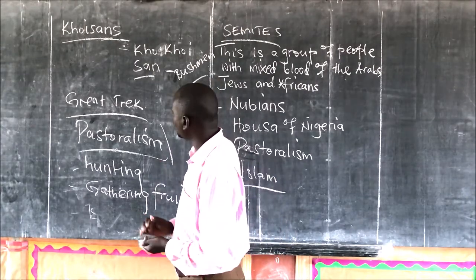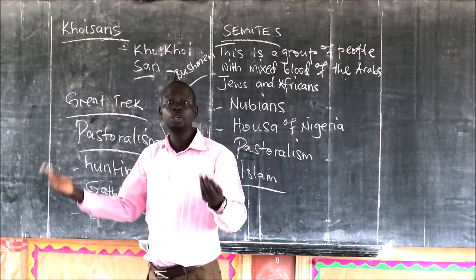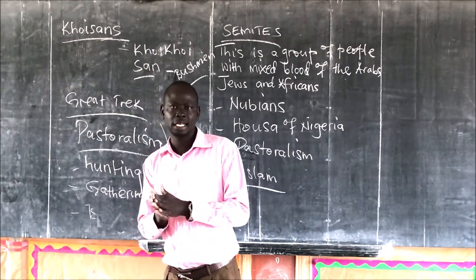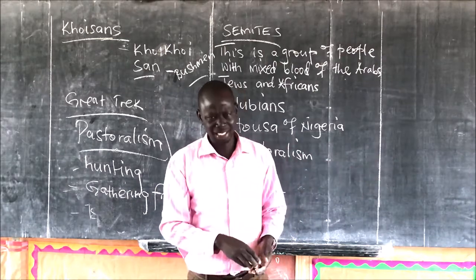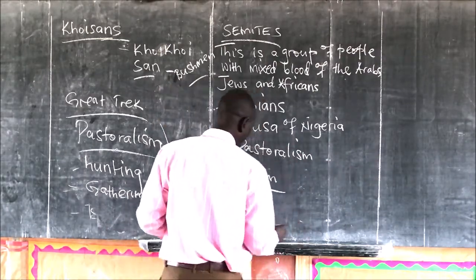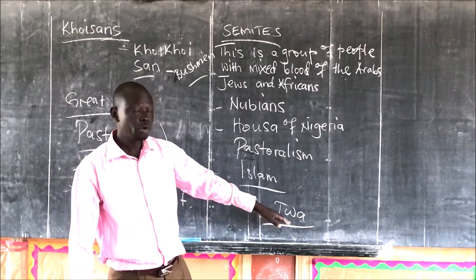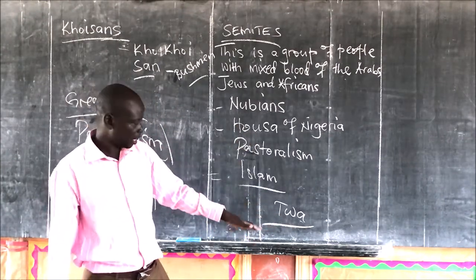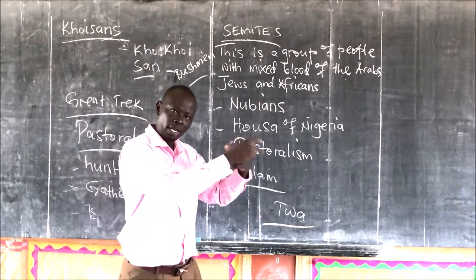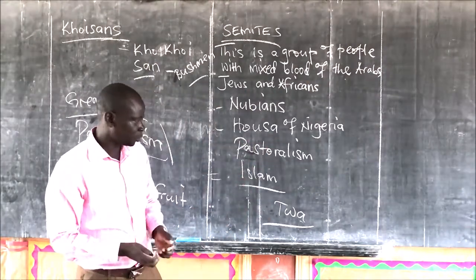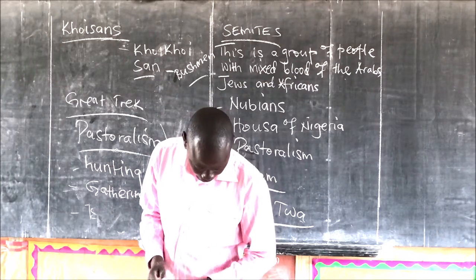They did not have kingdoms or chiefdoms; they just lived in camps whereby elders became the leaders. Currently you will get the Khoisan — the Khoikhoi and the San — in the Kalahari Desert, but their population is reducing because they are getting intermarried with other tribes. Just as the Twa, a tribe that lived in Rwanda and Burundi before the Hutu and Tutsi came in, are also reducing in population due to intermarriage with other tribes.